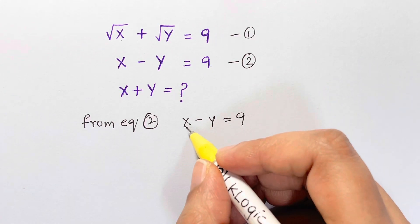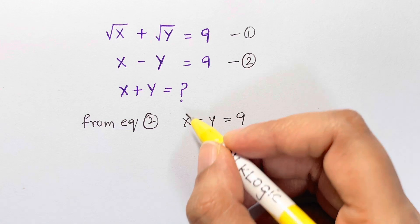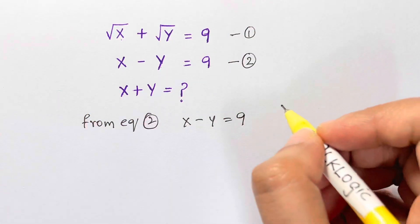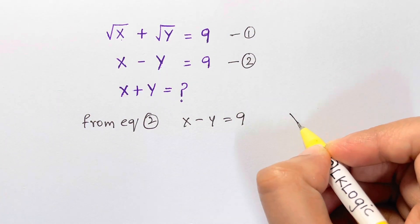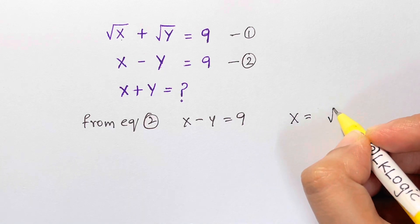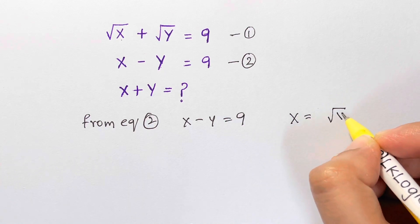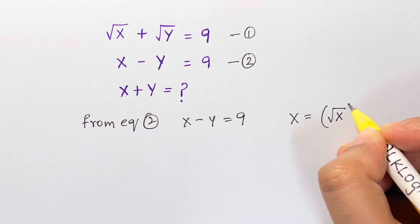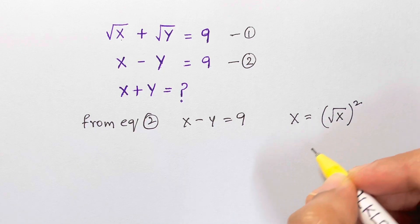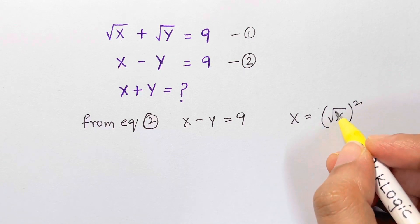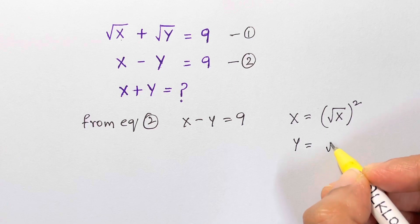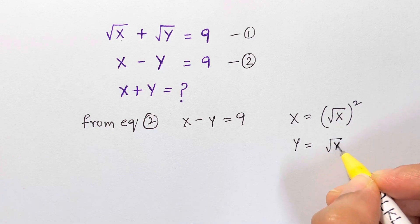Now I'm going to write x in terms of square root of x. x is equal to square root of x, the whole squared — the square and square root cancel to give back x. Similarly, y can be written as square root of y, the whole squared.